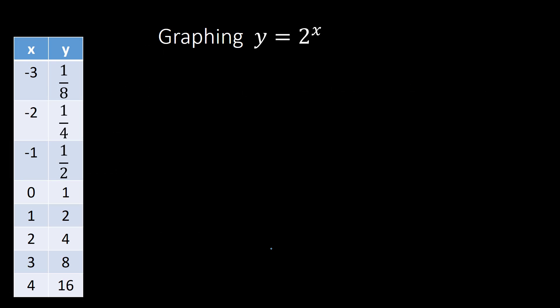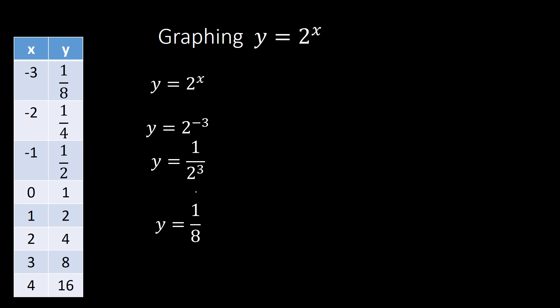How do we graph an exponential function? Let's say you had the function y equals 2 to the x power. We need to figure out what points we can put on the graph. The table is already given, but I'll walk through how we got each value. If x is negative 3, we have y equals 2 to the negative 3rd power, which is 1 over 2 to the positive 3rd power, or 1 over 8. That's where the y value 1 over 8 comes from.